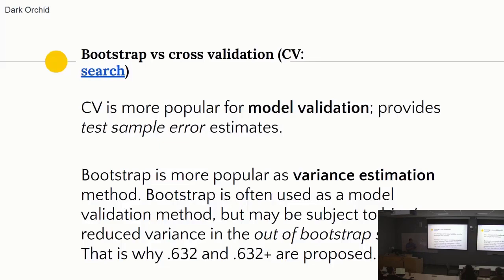Sometimes this out-of-bag or out-of-bootstrap approach gives biased estimates, and that's why we talk about the 0.632 and 0.632+ estimates. But if you are asking about a general preferred strategy, the preferred strategy would be cross-validation.